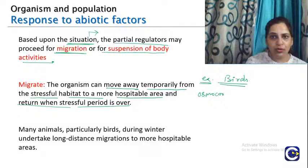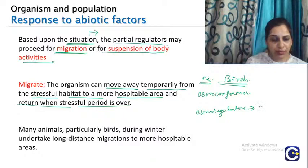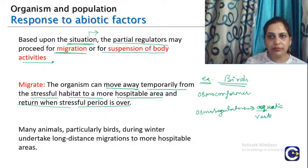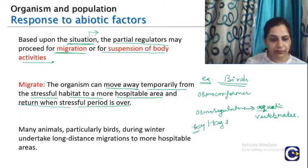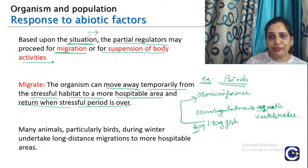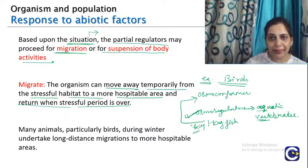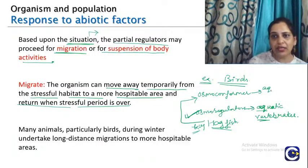Note down an important exception: all aquatic vertebrates are osmoregulators, but there is one exception — the hagfish, which is an osmoconformer. Most osmoconformers are aquatic invertebrates.